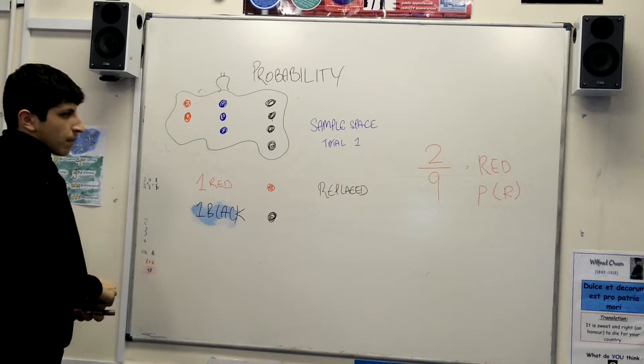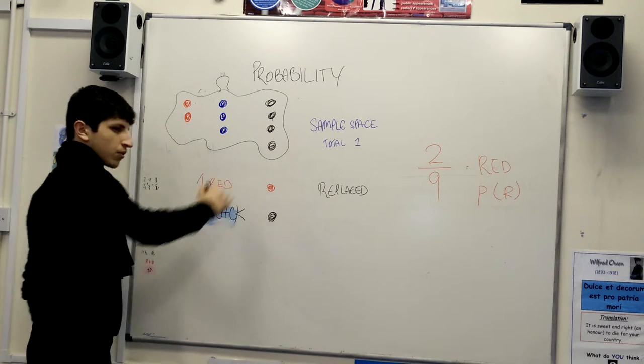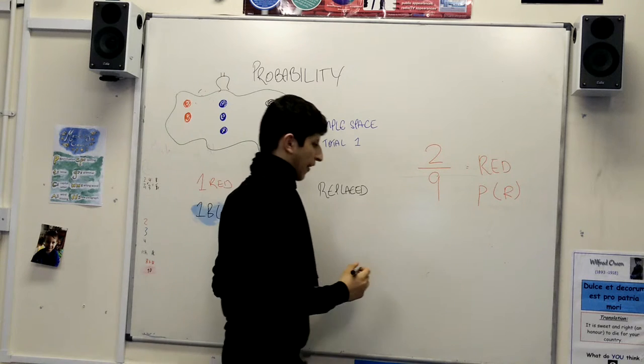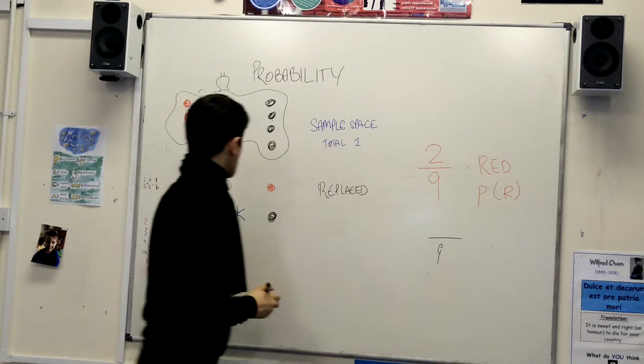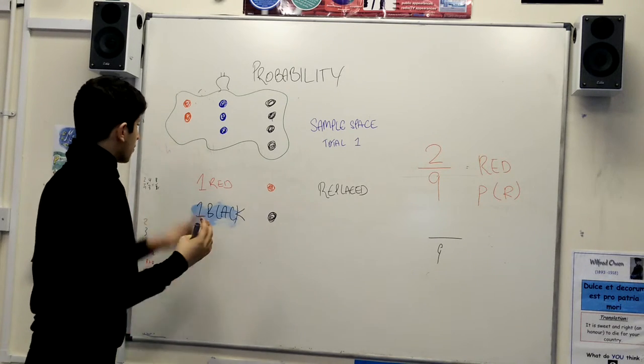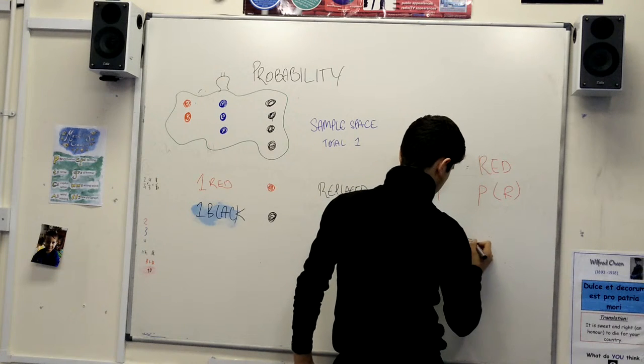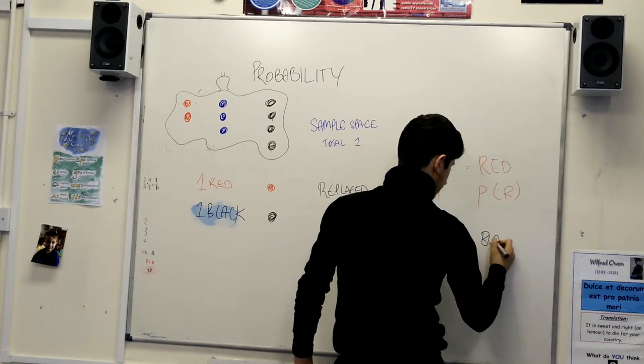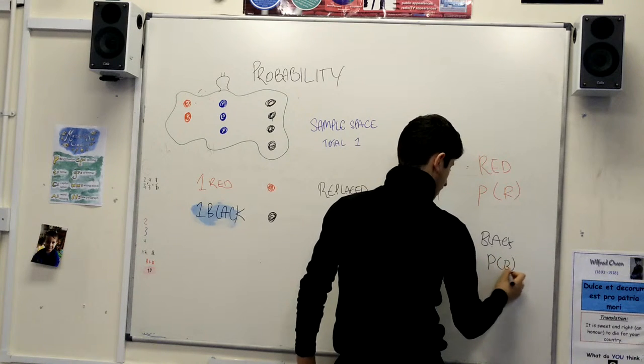Now, the probability of getting a black board is 4 out of 9. Now, you have 9 boards in the bag, you can only choose 4 black boards out of the total. 4 out of 9. So, 4 out of 9 is the probability of getting a black board. P of B is 4 out of 9.